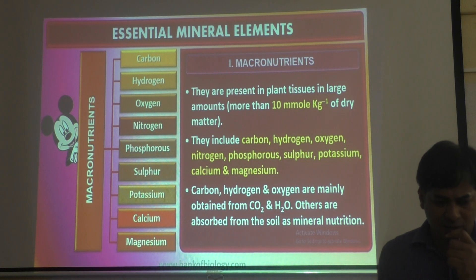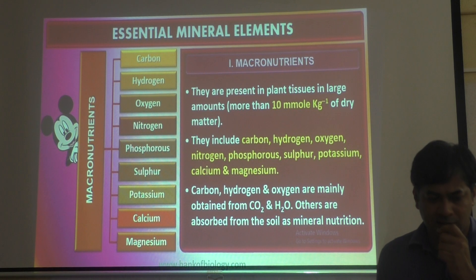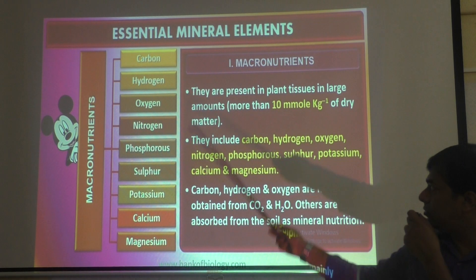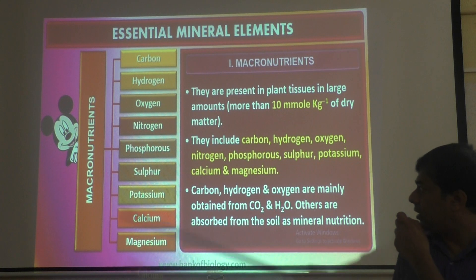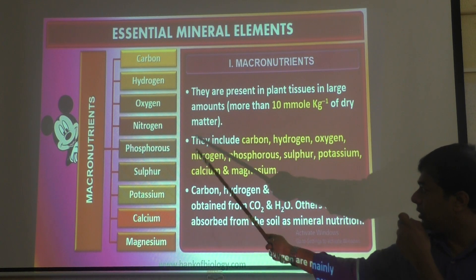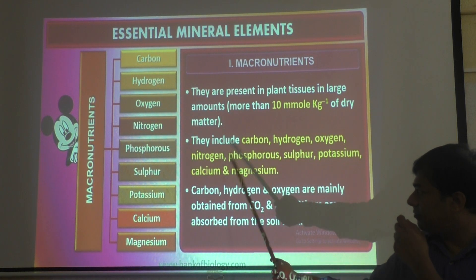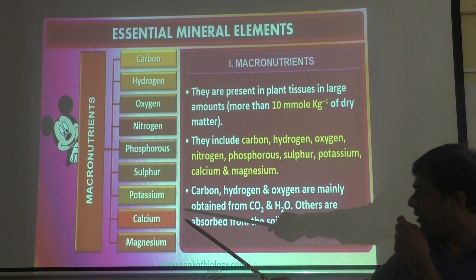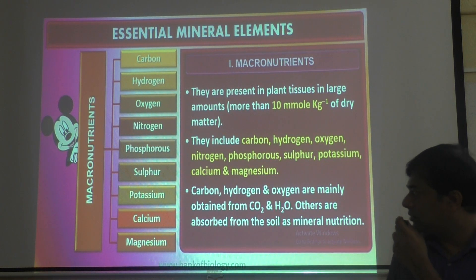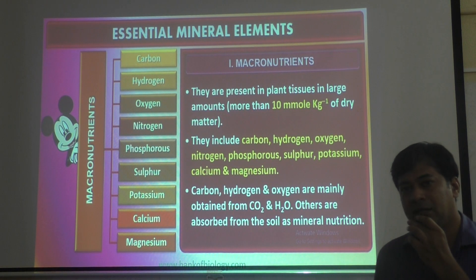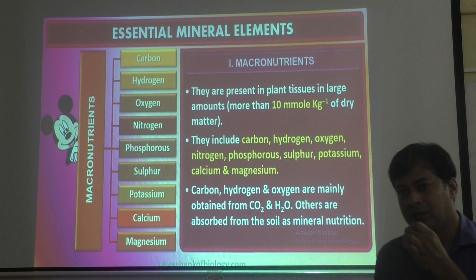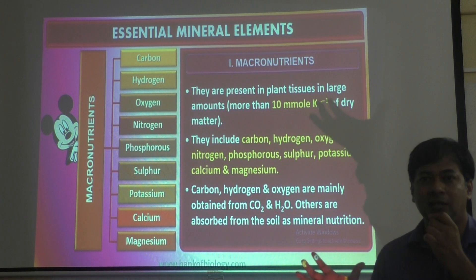Now, looking at the macronutrients listed: carbon, hydrogen, oxygen, nitrogen, phosphorus, sulfur, potassium, calcium, and magnesium — these are the nine elements in the periodic table that the plant requires in large quantity. They are present in plant tissues in amounts of more than 10 millimoles per kg of dry matter.